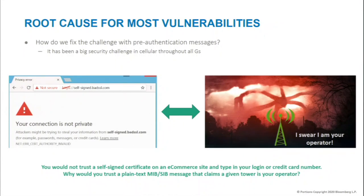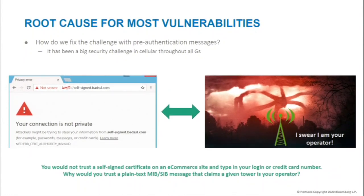The main challenge in cellular networks: there's not much difference between connecting to a cellular network and accepting a self-signed certificate. The implications are different — cellular networks are layer one and two — but conceptually it's the same thing. Nobody in this room would trust a self-signed certificate and type in their credit card number. So why would you trust a plain-text broadcast message that claims to be your operator? You're essentially seeing a message saying 'I swear I'm your operator, you should talk with me,' and your phone talks with it. That's been a problem for 2G, 3G, 4G, and now 5G.